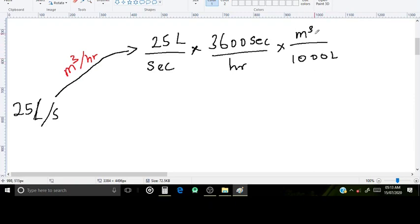This is because in every cubic meter we have 1000 liters, and in every 3600 seconds we have an hour. So the seconds cancel the seconds and the liters cancel the liters. We are left with cubic meters per hour, exactly what we're looking for.